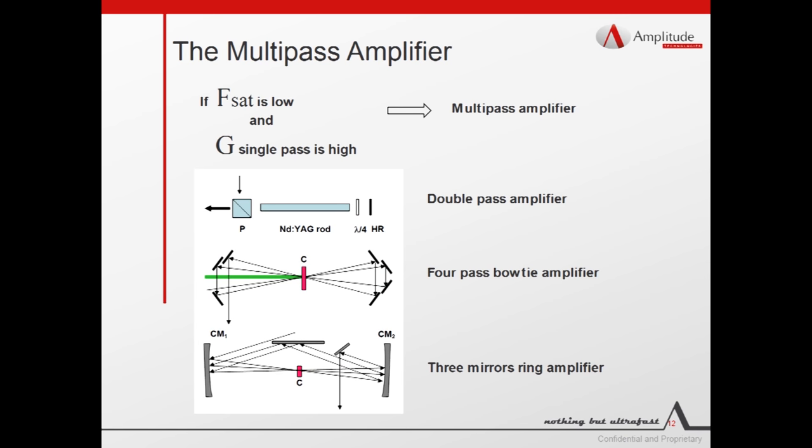When the saturation fluence is low and the gain per single pass is high, the alternative to the regenerative amplifier is the multi-pass amplifier. This amplifier has no resonator and the beam is passing through the medium several times until the energy stored is extracted. Different configurations are possible for this kind of amplifier and the design depends on the number of passes required.